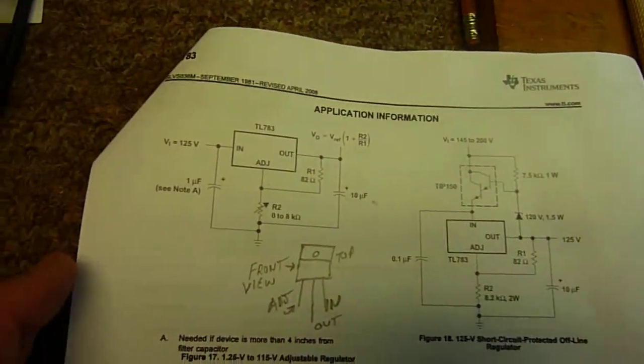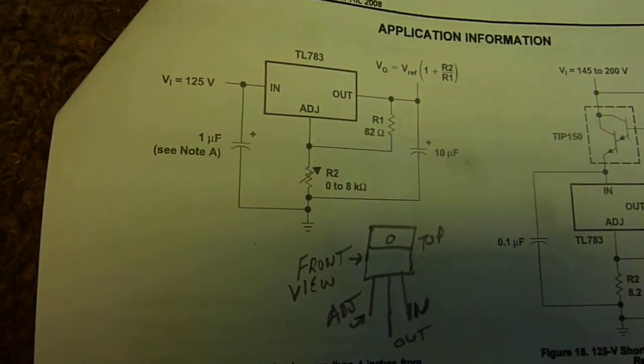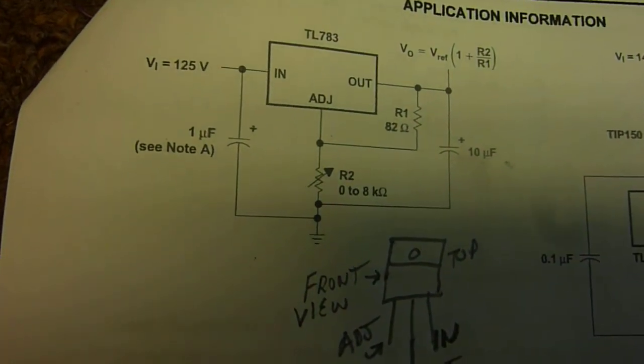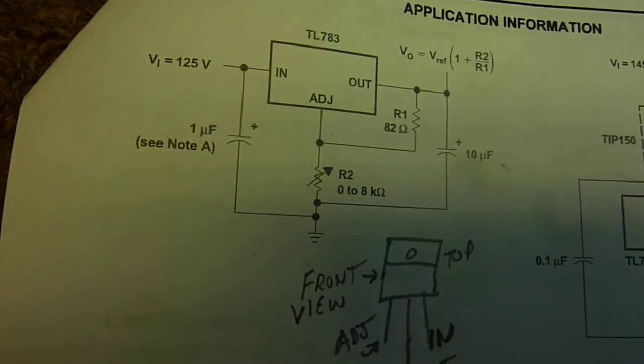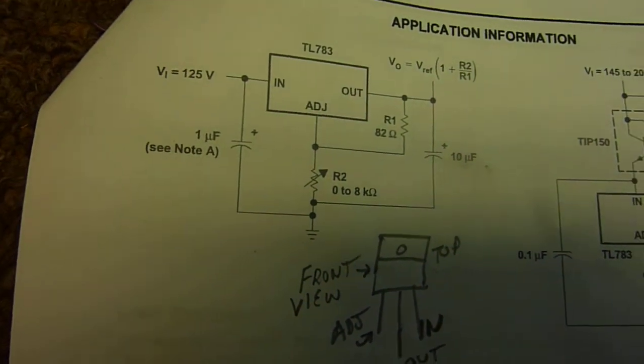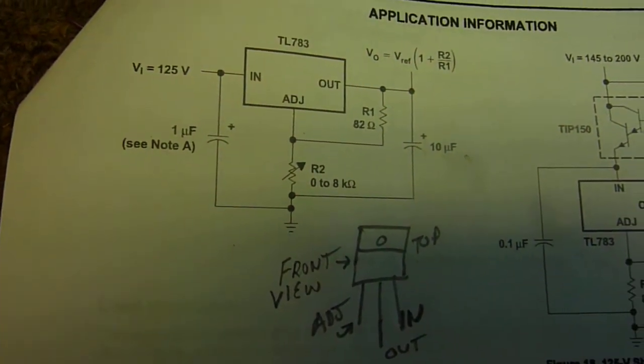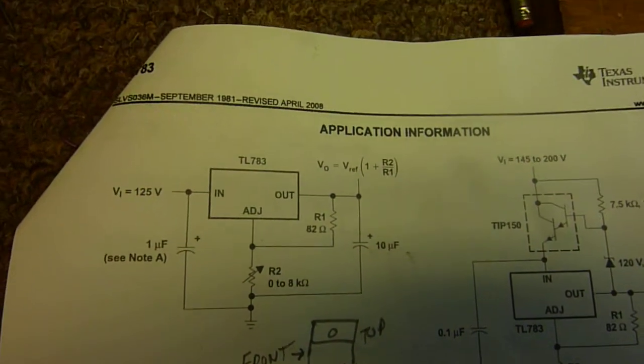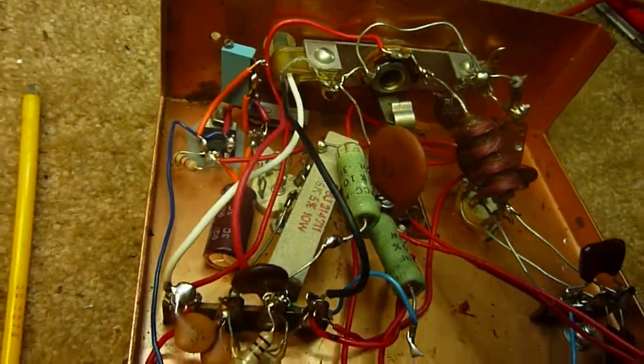Here is the circuit for that voltage regulator. Not much to it at all. Now this is also available on the internet. This is Texas Instruments information. But if you do a Google for TL783 integrated circuit regulator, high voltage regulator, you will find the information will come up.